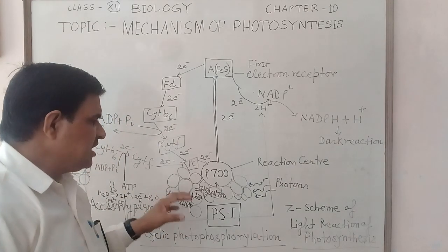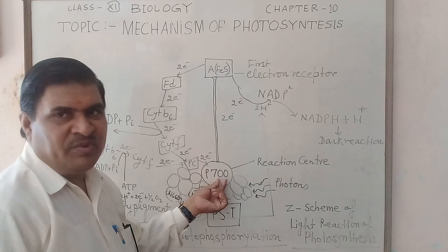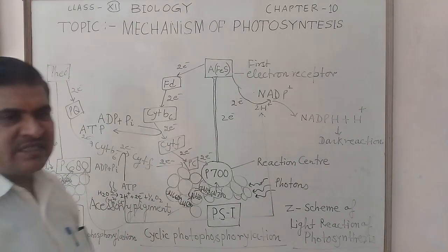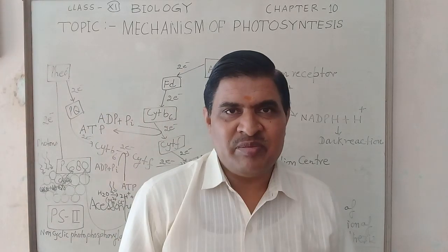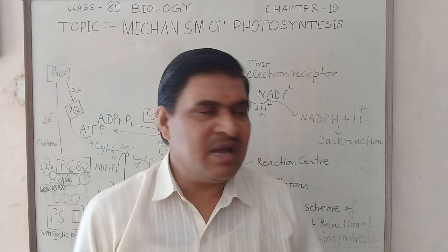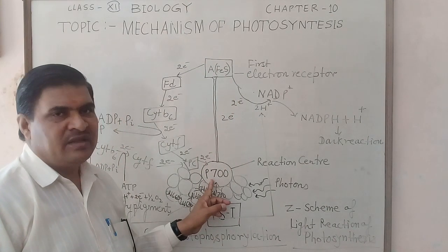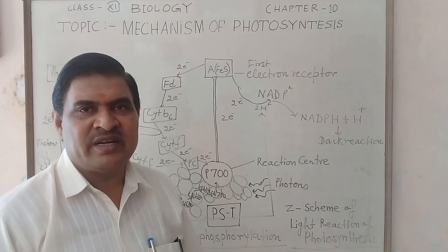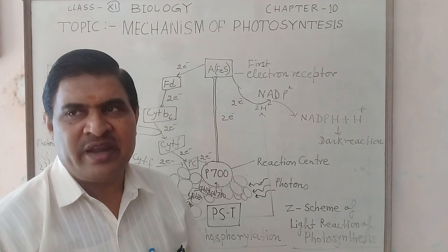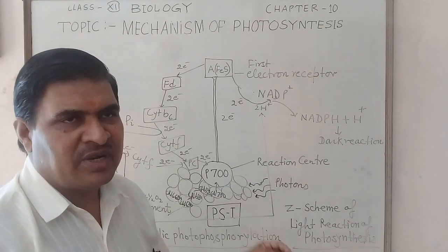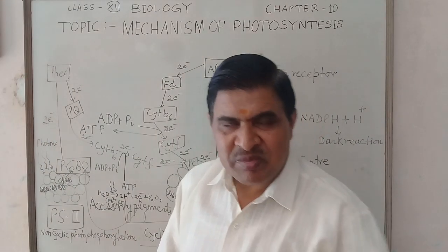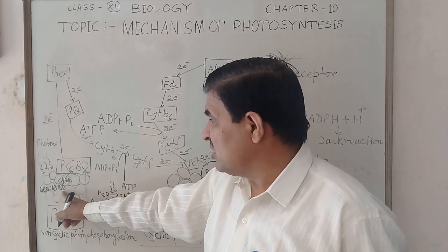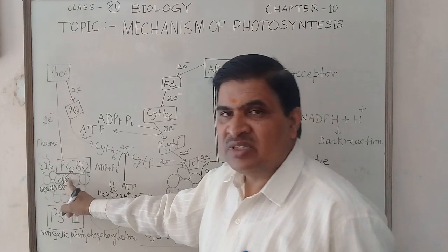In summary, the accessory pigments in Photosystem I include carotenoids and phycobilins, with chlorophyll forms 680, 690, and 700 providing energy to P700. In Photosystem II, accessory pigments include chlorophyll 650, 660, 670, and 680, providing energy to P680.